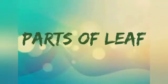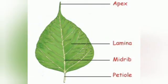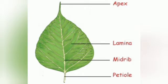Parts of a leaf: The tip of the leaf is known as the apex, and the flat part is known as the lamina. The line that divides the leaf into two parts is known as the midrib, and the part that attaches the leaf to the stem is known as the petiole.